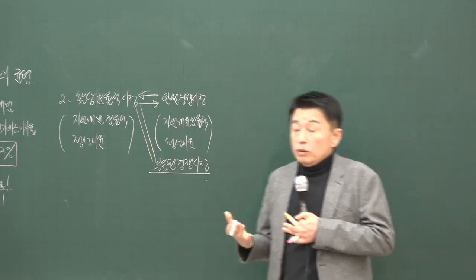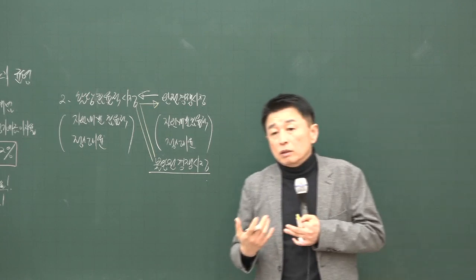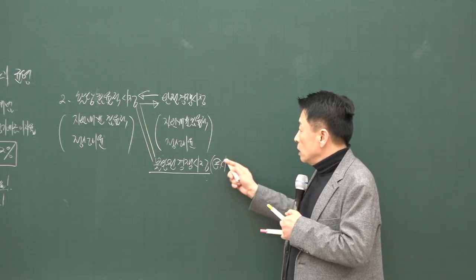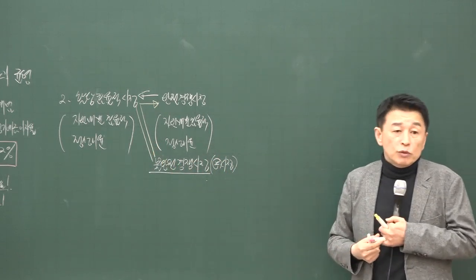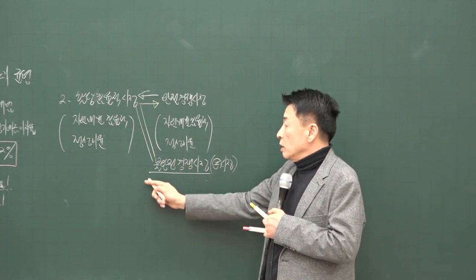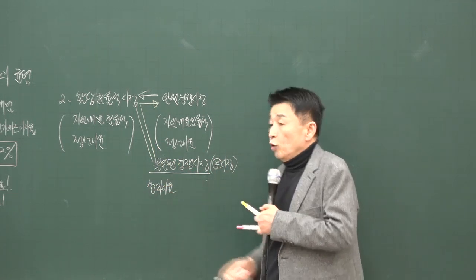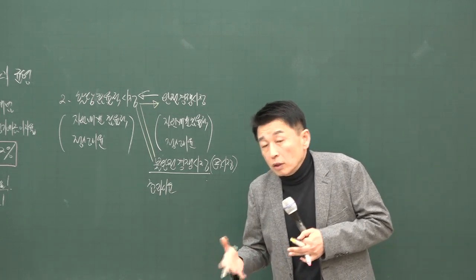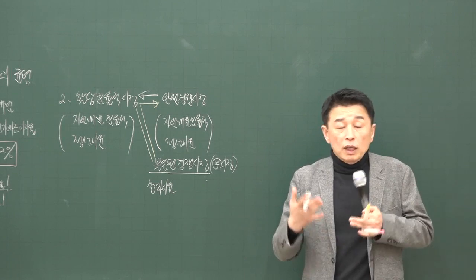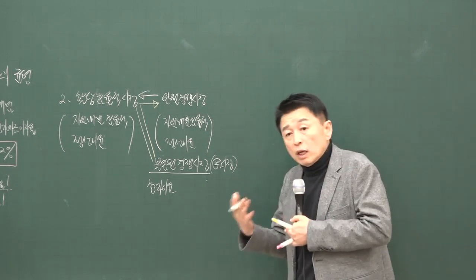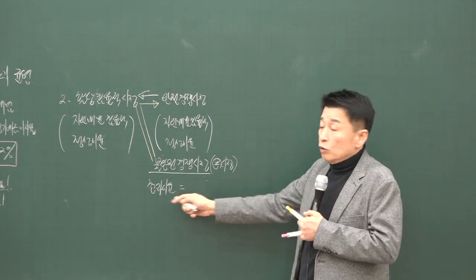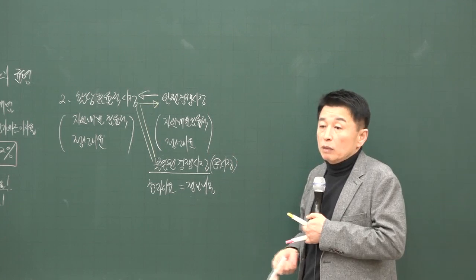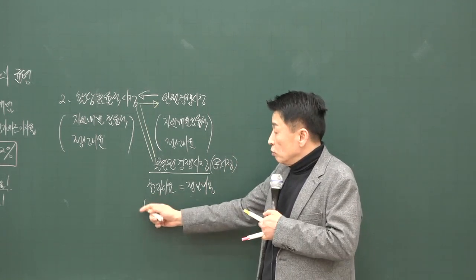부동산 시장은 불완전 경쟁 시장의 성격을 갖고 있지만, 일정한 조건이 충족되면 할당 효율적 시장이 될 수 있습니다. 불완전 경쟁 시장에서는 초과 이윤이 존재하지만, 이를 획득하기 위해서는 정보에 대한 대가를 치러야 해요. 내가 얻을 수 있는 초과이윤과 정보 비용의 크기가 서로 같아진다면, 이 시장에서도 정상이윤만 남게 됩니다. 예를 들어 정보를 이용해 얻을 수 있는 초과이윤이 천만 원이라면, 정보 비용이 처음에는 소수에게만 주어질 수 있어요.